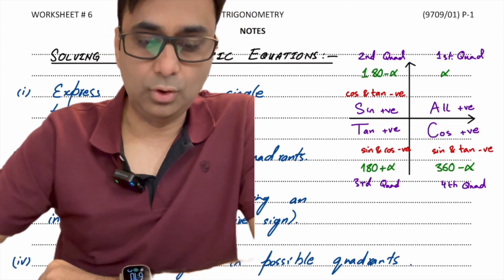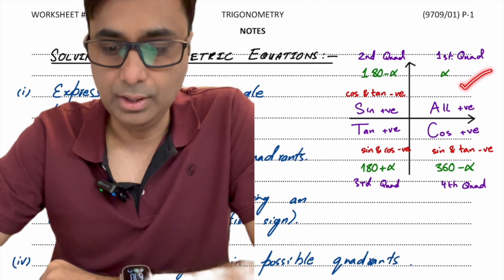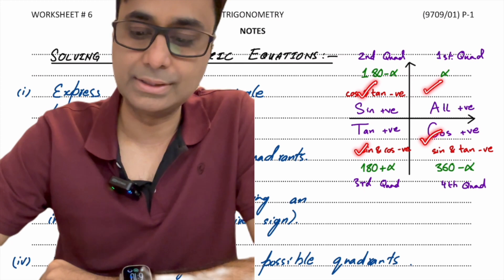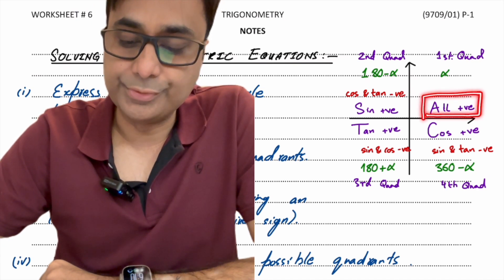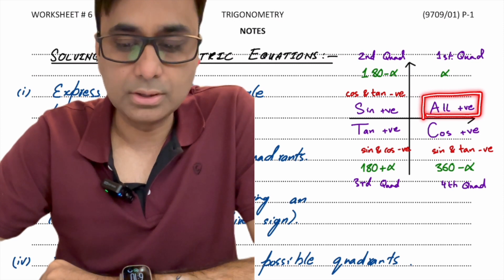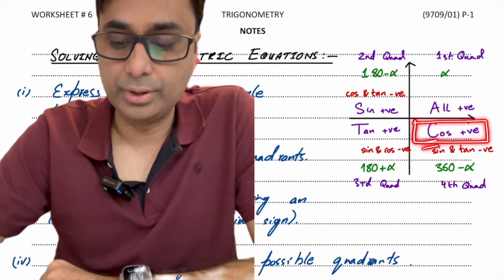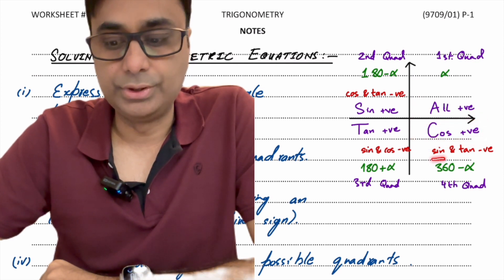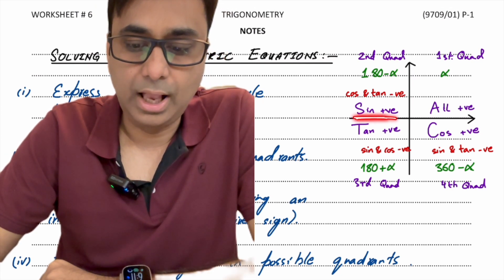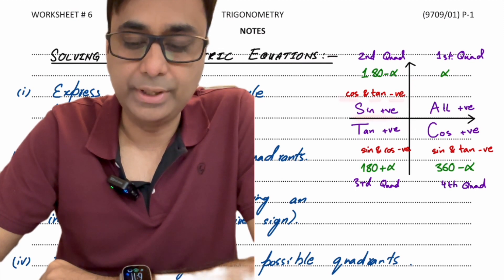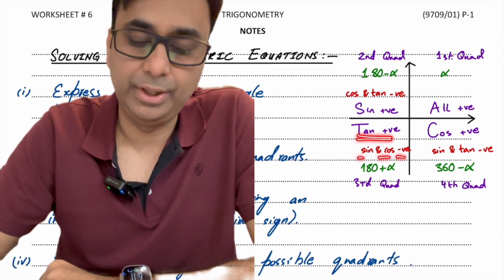Before we start solving trigonometric equations, learn this diagram. We split the axis into four quadrants. All trigonometric ratios are positive in the first quadrant. In the fourth quadrant, only cos is positive, meaning sine and tan are negative. In the second quadrant, sine is positive and cos and tan are negative. In the third quadrant, tan is positive and sine and cos are negative.